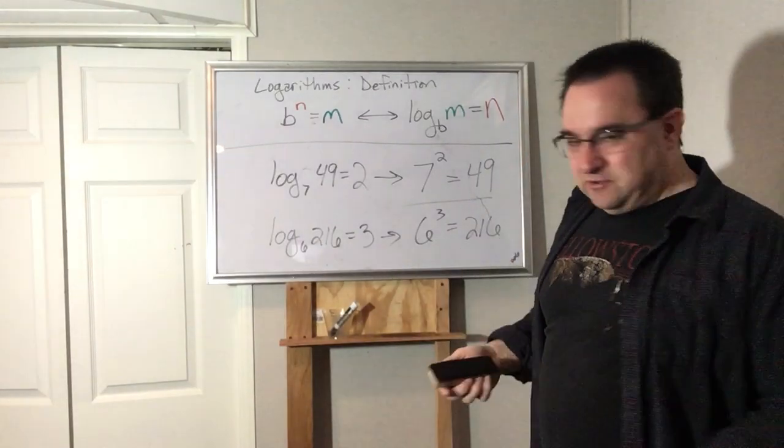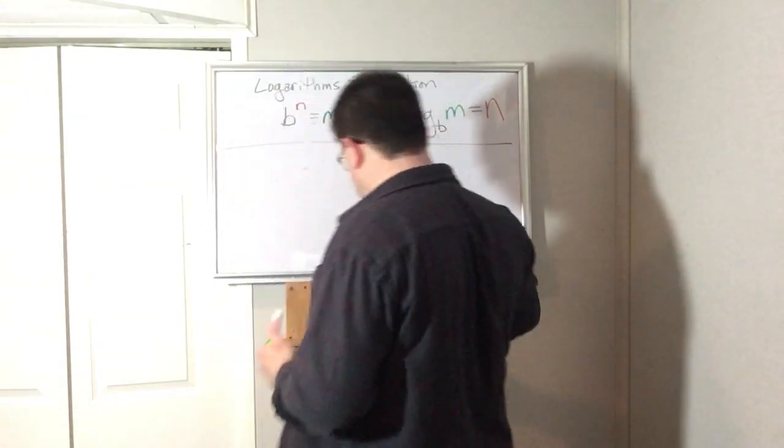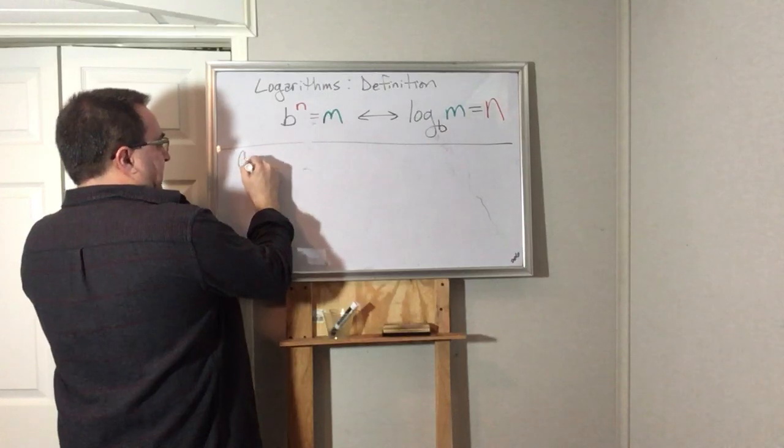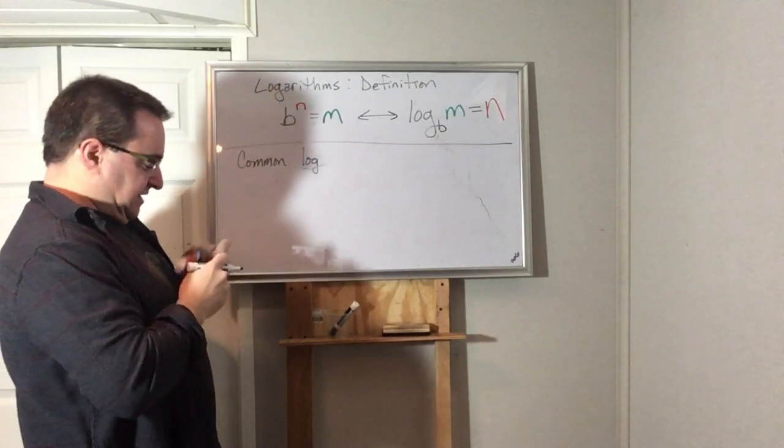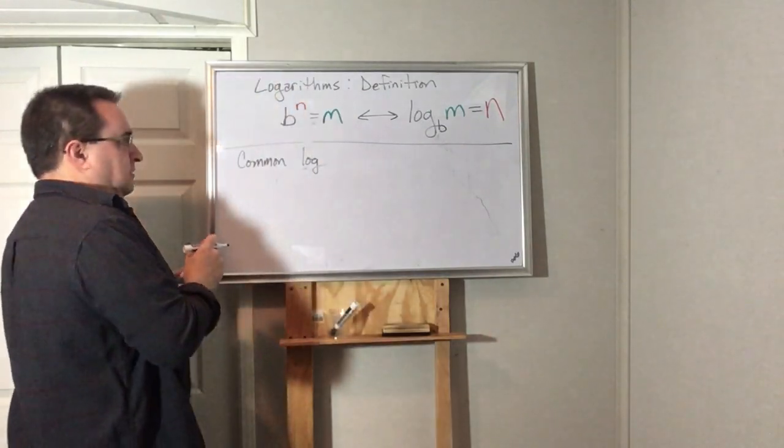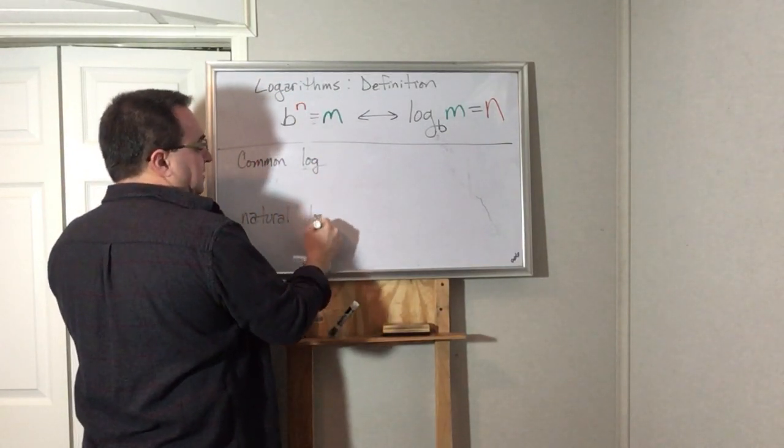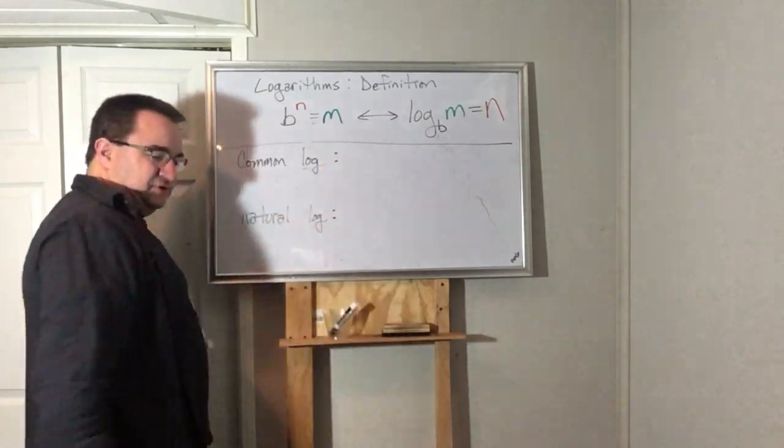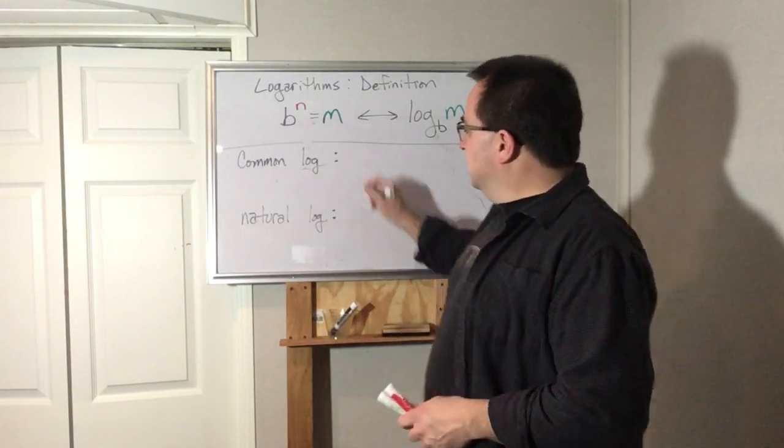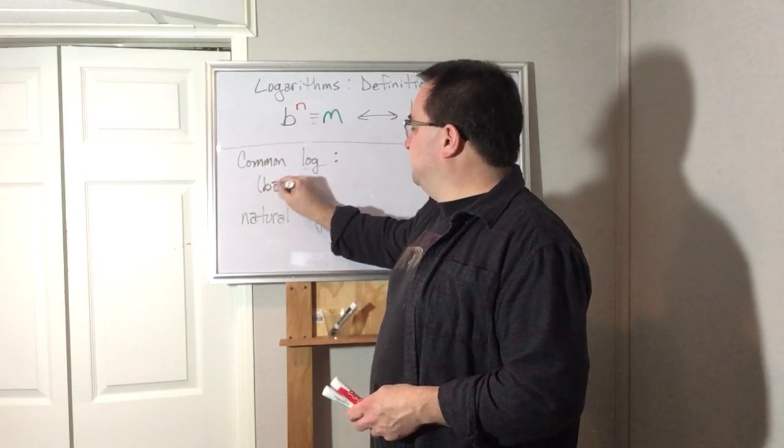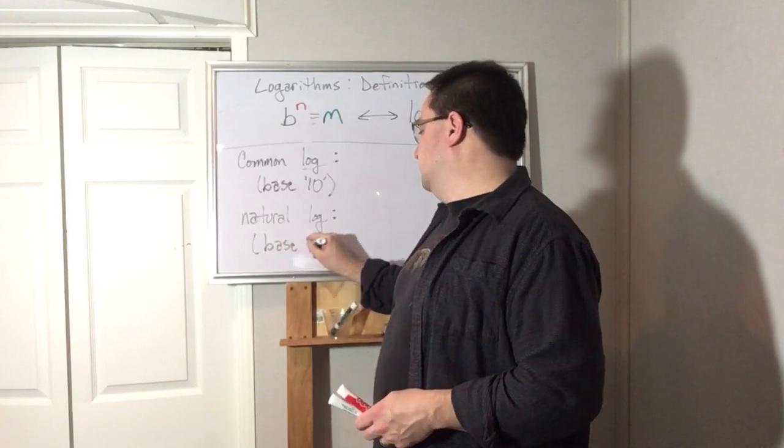So what else on this intro lesson on logarithms? Well, there's two special kinds of logarithms. One is called the common log. Let me put a cap on this marker here since I can't go out and get extras. And one is called the natural log.